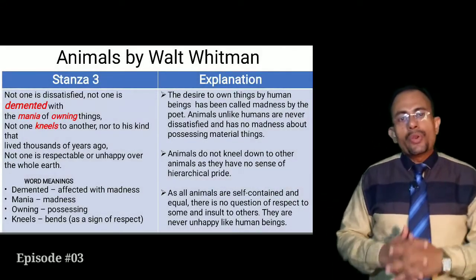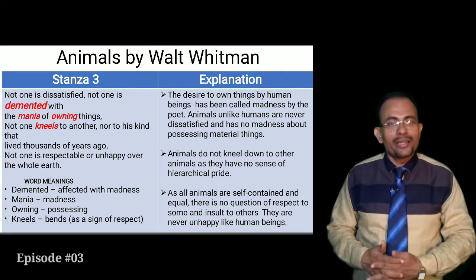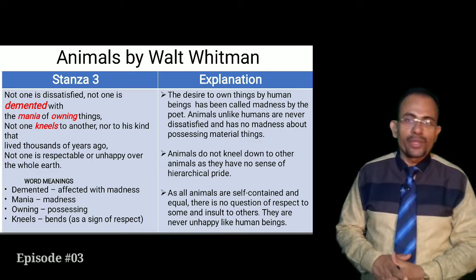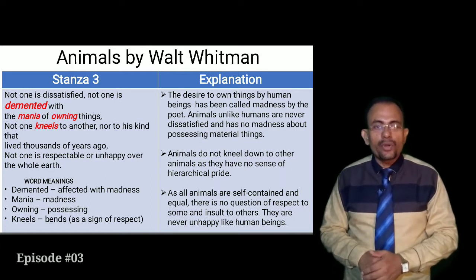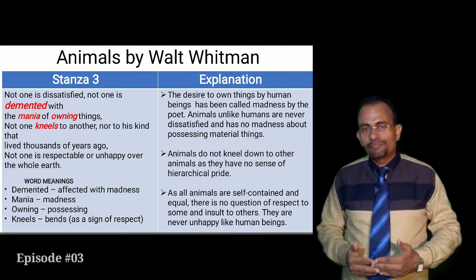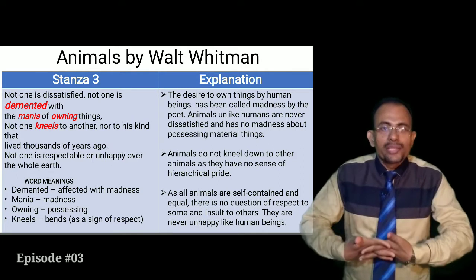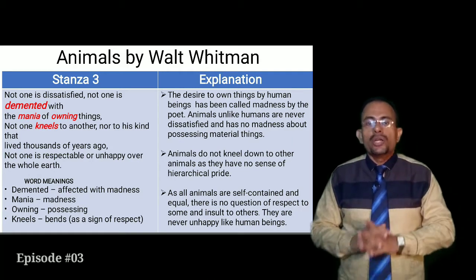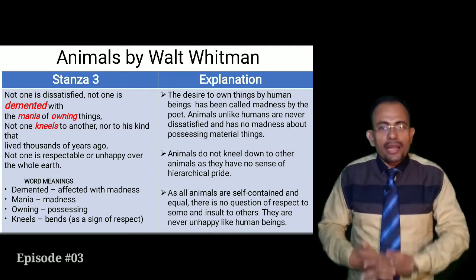Stanza three: 'Not one is dissatisfied, not one is demented with the mania of owning things, not one kneels to another nor to his kind that lived thousands of years ago, not one is respectable or unhappy over the whole earth.' Here 'demented' refers to affected with madness or craze. 'Mania of owning things' means the madness for possessing material things. No animal is dissatisfied or demented — animals do not have the tendency of owning things like human beings do.